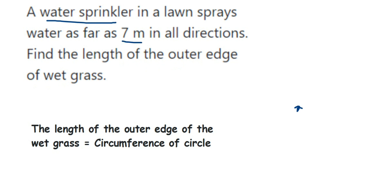So it is not diameter, it is radius we have given. A water sprinkler in a lawn sprays water as far as 7 meters. Now suppose this is a sprinkler, so it can spray water up to 7 meters, which means the radius will be 7 meters, and we have to find out the length of the outer edge.